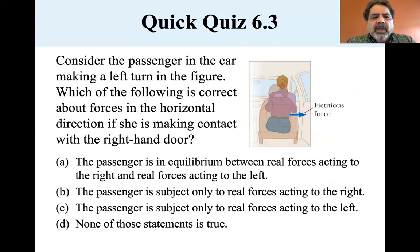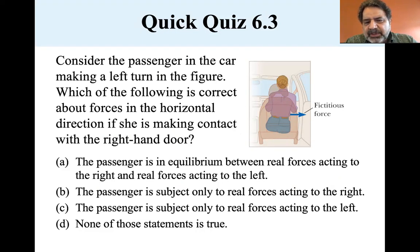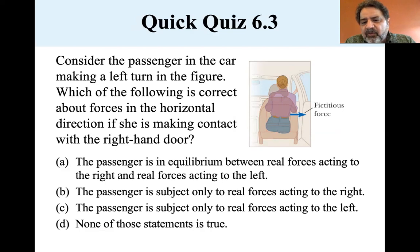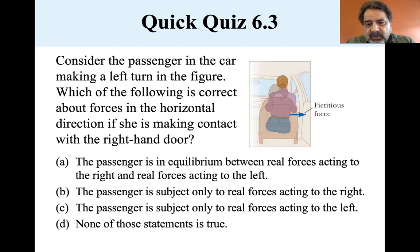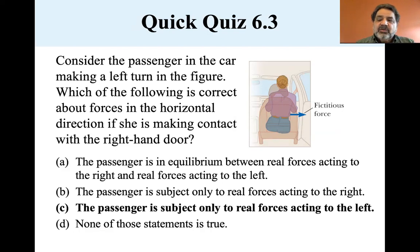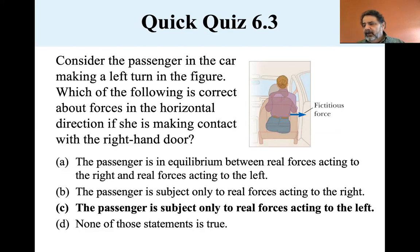Here's a quick quiz. Consider the passenger in the car making a left turn. Which of the following is correct about forces in the horizontal direction if she is making contact with the right-hand door? The answer is that the passenger is subject only to real forces acting to the left — that's the friction from the seat and the car door. Those are the real forces acting on the passenger.